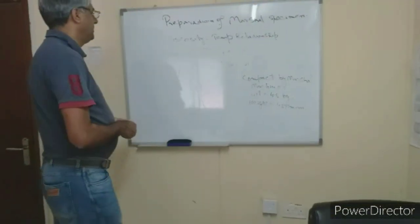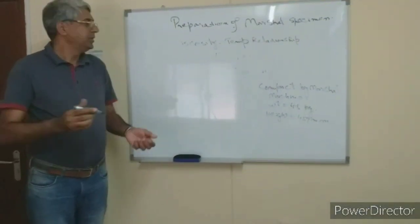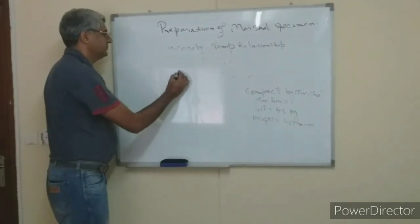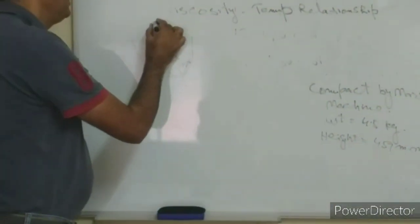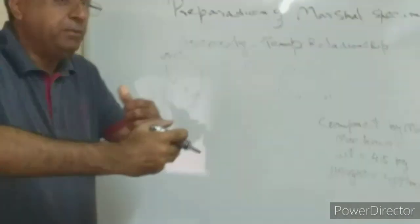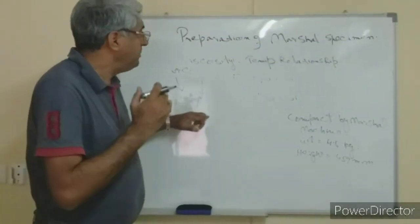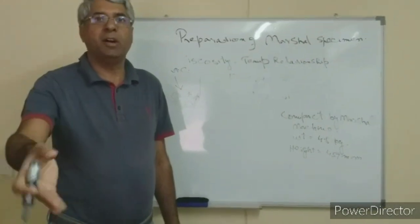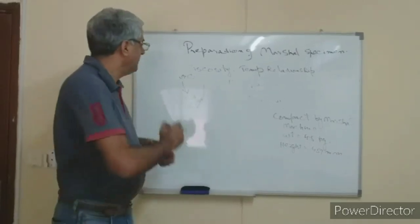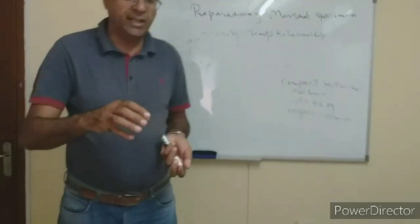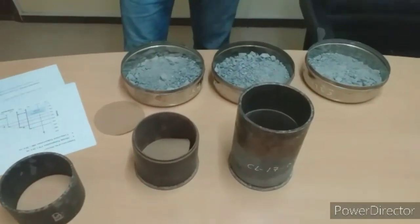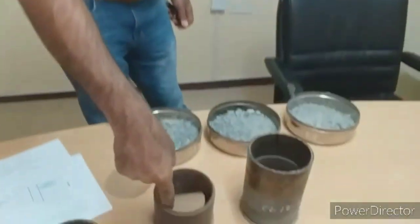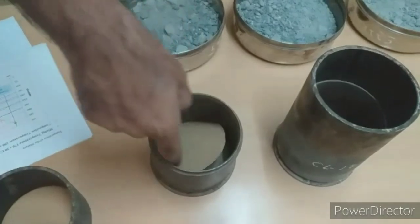Our next step: take a pan, put the aggregate material in it, then add the asphalt content and mix it well. The mixing temperature depends on viscosity — 170 plus or minus 20 CST, as already discussed. Once mixed, place the material into the Marshall mold. Using a spatula, tamp it 15 times along the perimeter and 10 times from the center.